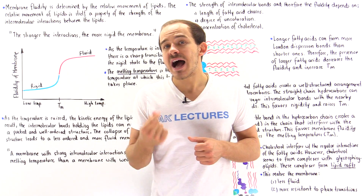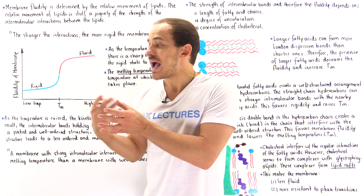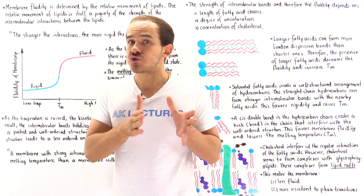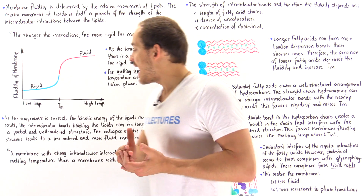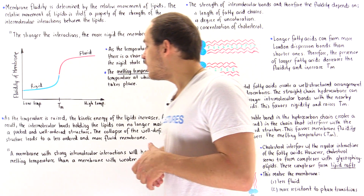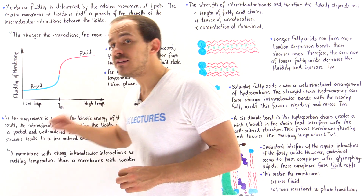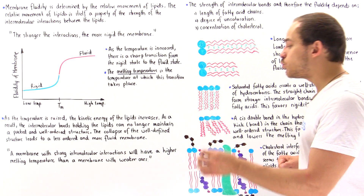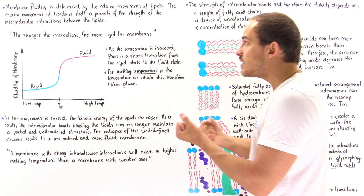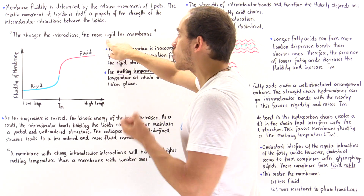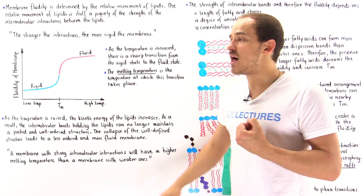A higher amount of energy — a higher temperature — must be used to collapse the well-defined structure that exists due to those stronger intermolecular interactions. Therefore, a membrane with strong intermolecular interactions will have a higher melting temperature than one with weaker interactions. Stronger interactions imply a more rigid, well-ordered structure and a higher melting temperature.